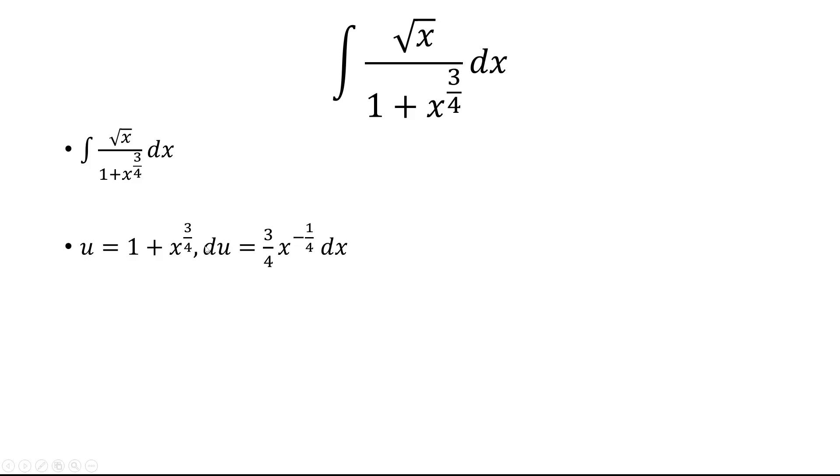The way to get x to the 1/2 power is to multiply x to the 3/4 with x to the negative 1/4. So that means I have to solve for x to the 3/4 by subtracting 1 here. And then I'm going to multiply both sides by 4/3 to get x to the negative 1/4.